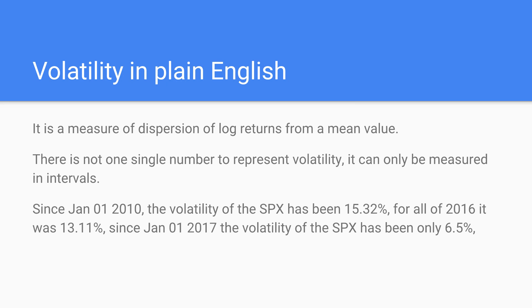The most important concept I want you to take away is that volatility is a measure of dispersion, but there is not a single number for it. You cannot just ask 'what is the volatility of the market?' — there are infinite answers. Volatility is a standard deviation that operates on a population, and in the case of a time series the population consists of log returns from different dates. So I can only tell you the volatility for a specific number of past days.